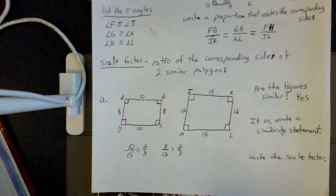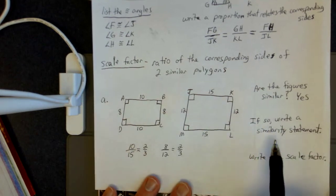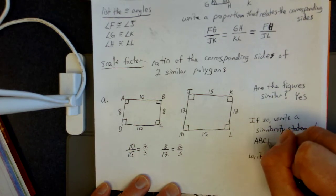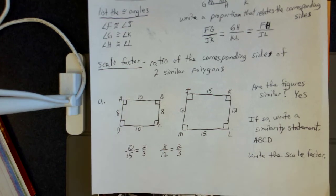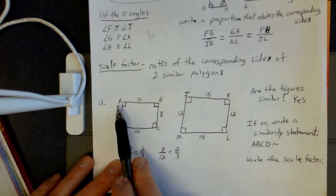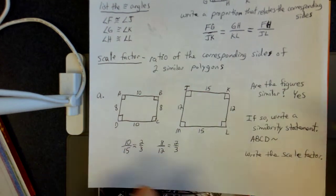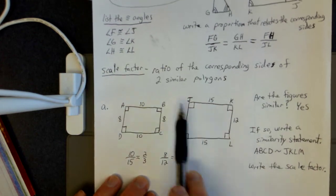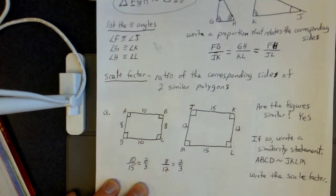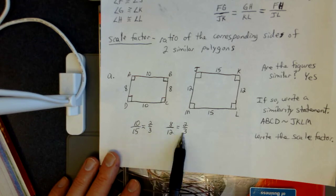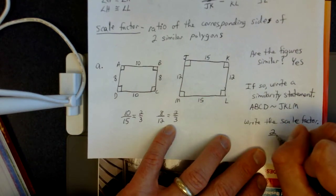The similarity statement: we put the letters in the exact same order. Since it's not a triangle I don't use a triangle symbol, so I'll call the left-hand figure ABCD, put the similarity symbol in between, and match it up to JKLM. There's the similarity statement: ABCD is similar to JKLM. The scale factor is the ratio of corresponding sides — all our sets of sides had a ratio of 2 to 3, so our scale factor is 2/3.